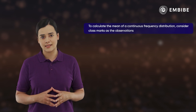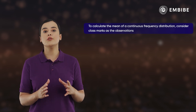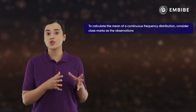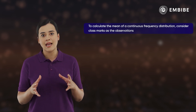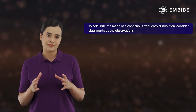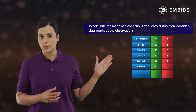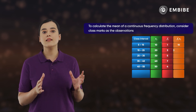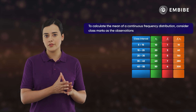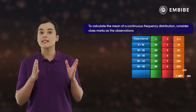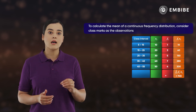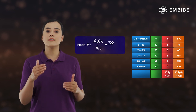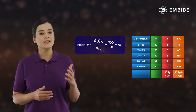The rule remains the same when we have a continuous frequency distribution. The only difference is that we consider the class marks of each class interval as xᵢ. For a continuous frequency distribution, the fᵢxᵢ values are calculated using the class marks as observations. Their sum is 700 and the sum of fᵢ's is 20, so the mean is 700 ÷ 20, that is 35.